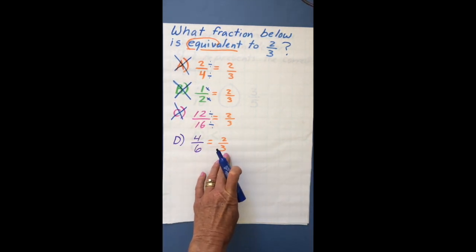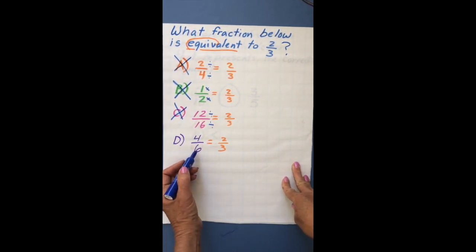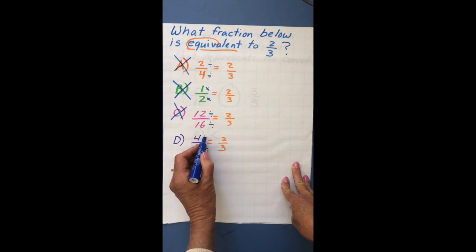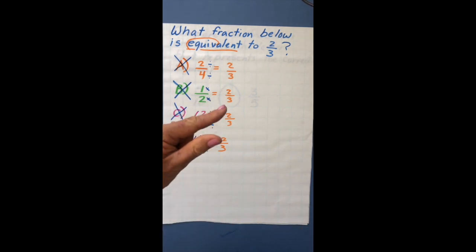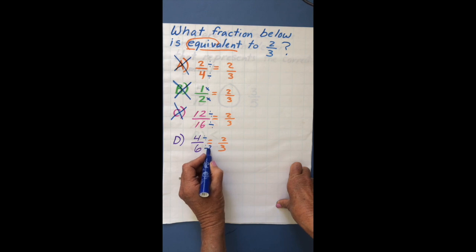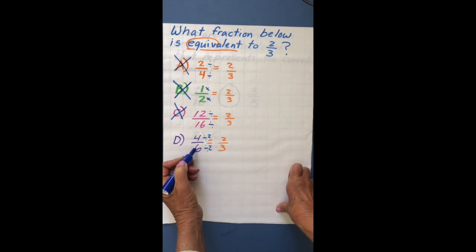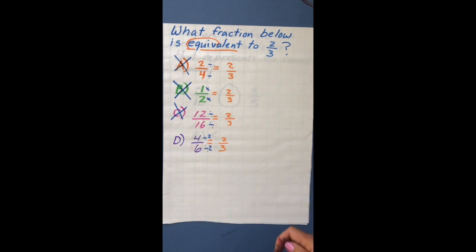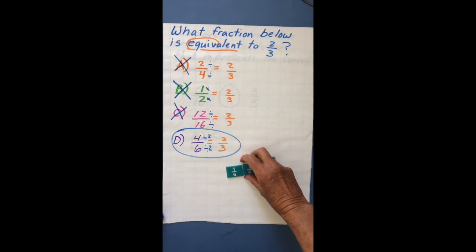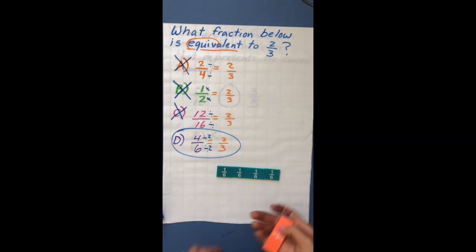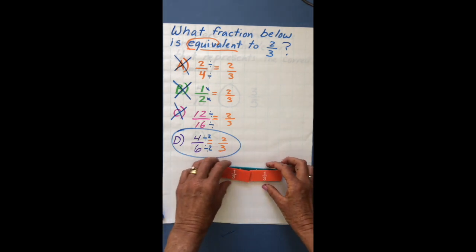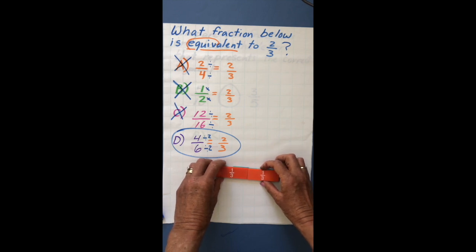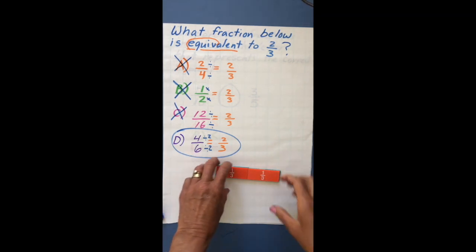Let's try the last option with a 6. Since 6 is bigger than 3 we divide. How many 3's are in 6? 3, 6 — it went in 2 times. So if I divide 6 by 2 I get 3, and 4 divided by 2 is 2. This is the correct answer. Using fraction tiles, 4 sixths lines up exactly with 2 thirds — they match up perfectly. That's why this one works.